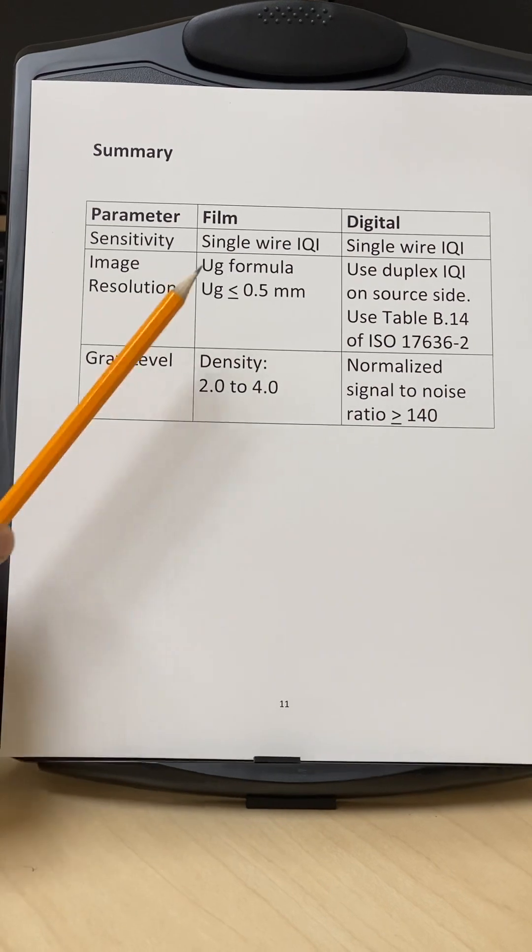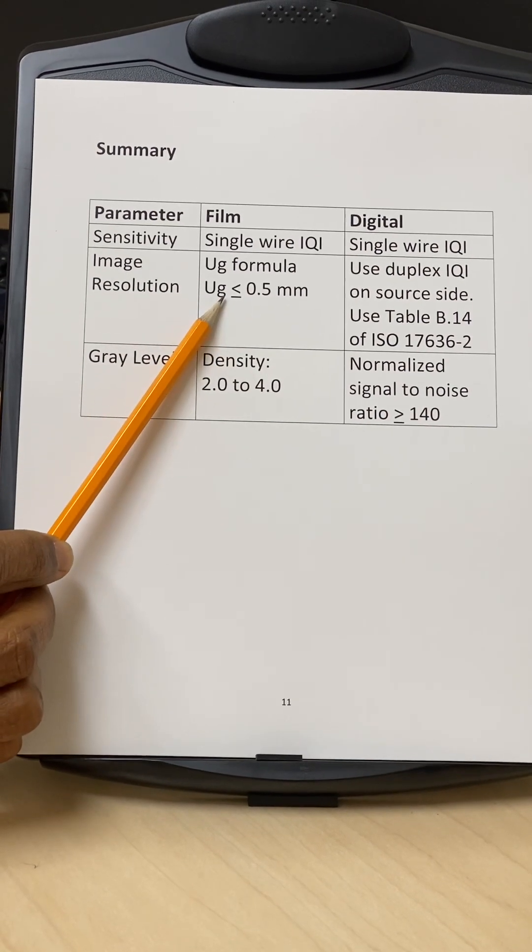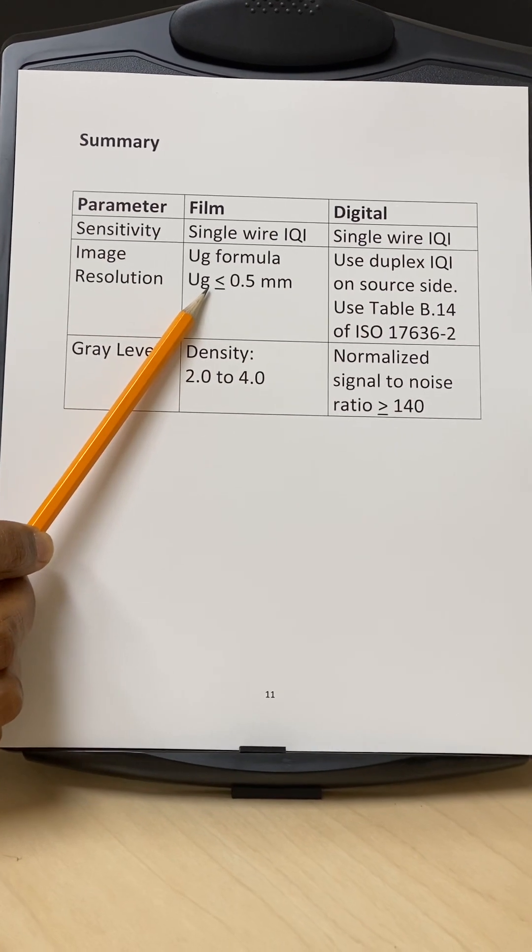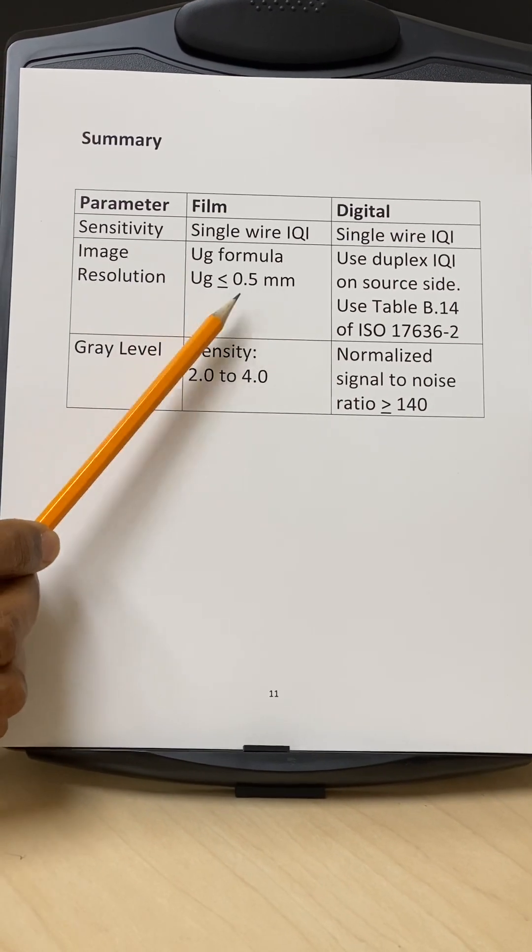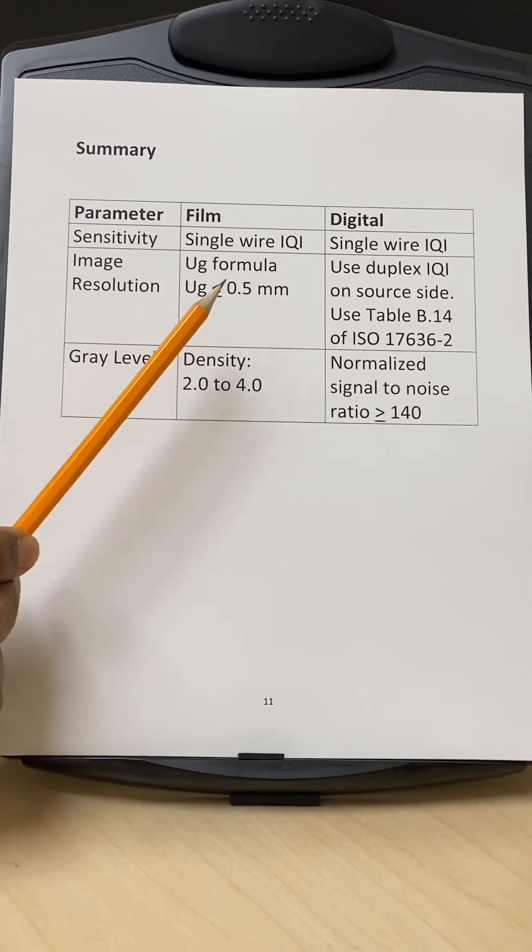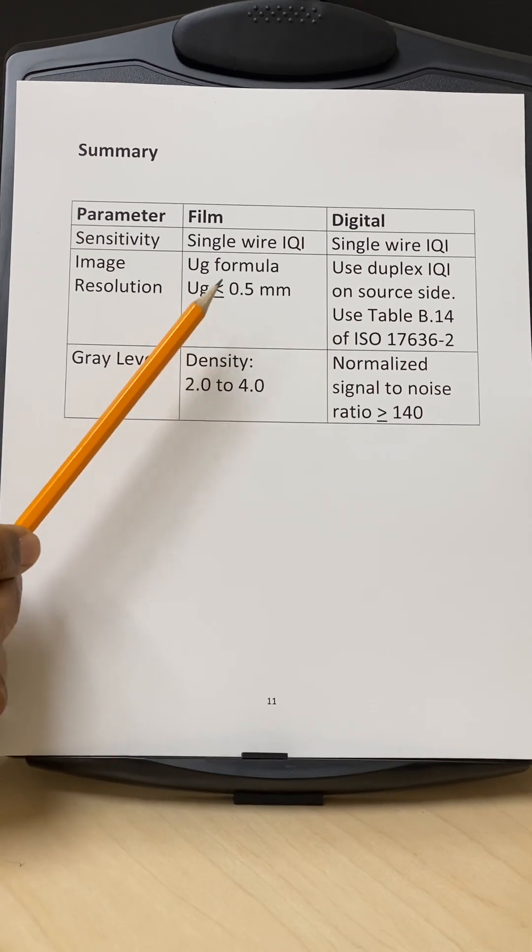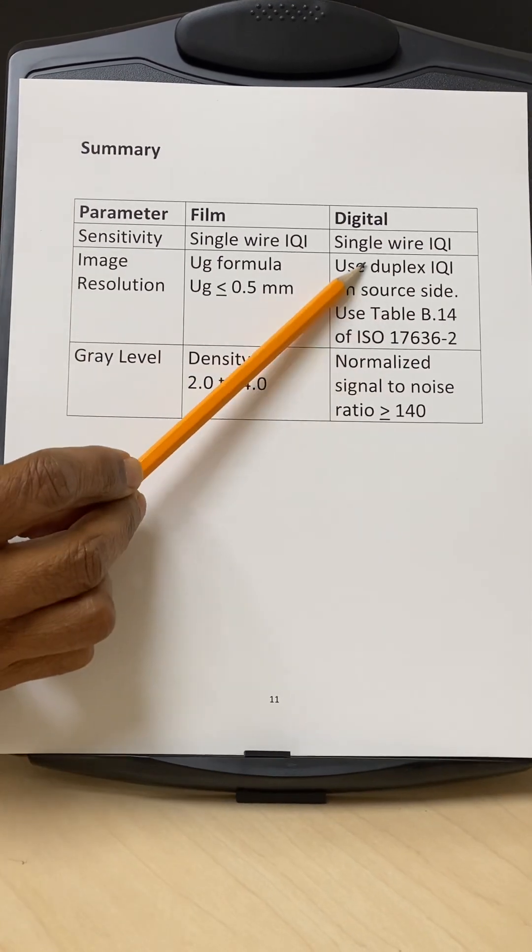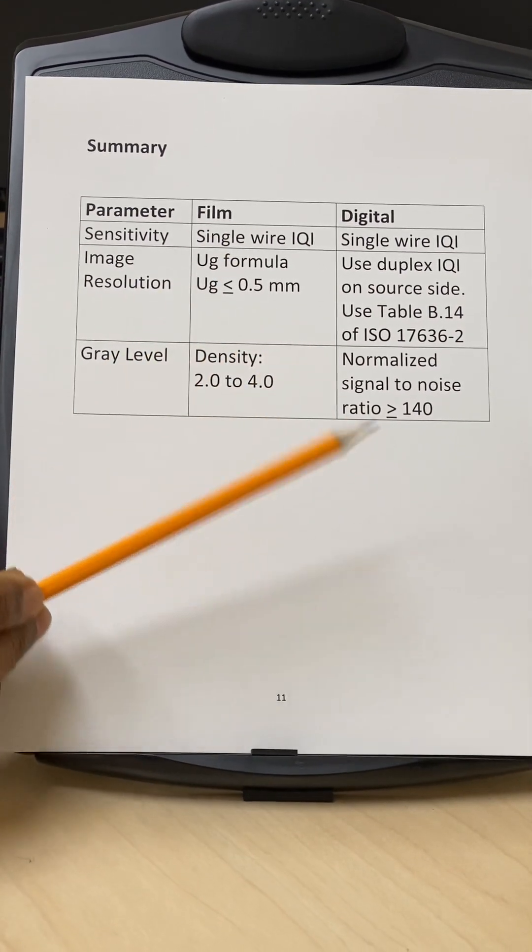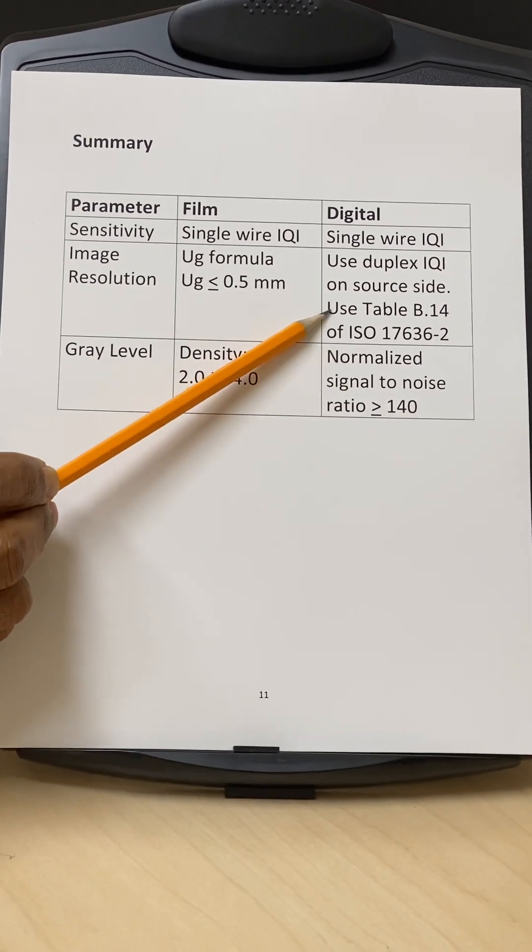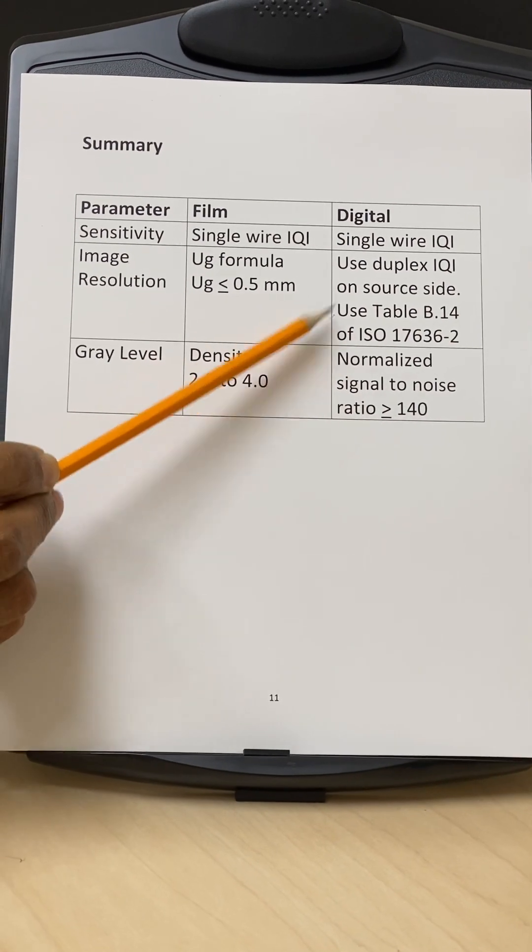For film, we simply apply the UG formula, which is the conventional formula. And everybody knows that who's doing film radiography. But remember, this is not applicable for digital. For digital, you must use duplex wire IQIs with those 13 wire pairs. And then select the wire pair based on this table for weld quality and make sure you can resolve it.